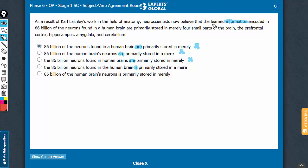Meaning is important here. The meaning is that the information is encoded in the 86 billion neurons, all of the 86 billion neurons found in a human brain, not 86 billion of the human brain's neurons. This changes the meaning. This would convey that the human brain has more than 86 billion neurons and we're talking about the information encoded in 86 billion of the many more neurons in the human brain. The correct meaning is the information encoded in the 86 billion neurons found in the human brain. There is a subtle change in meaning.